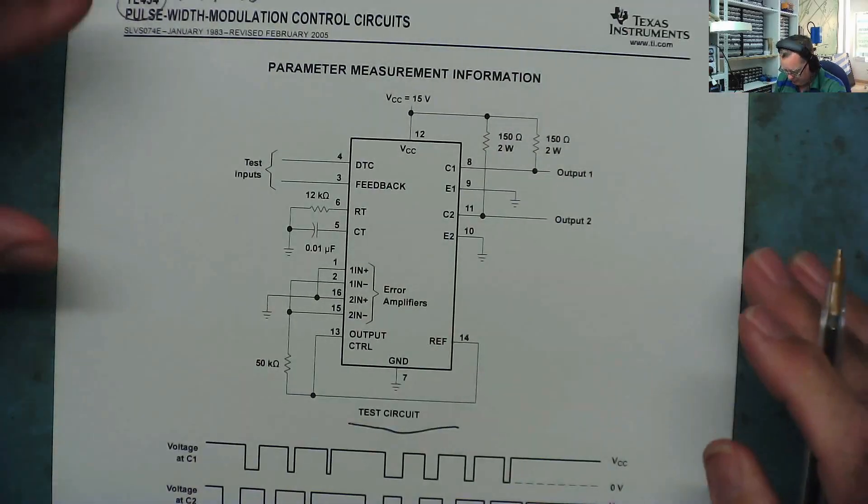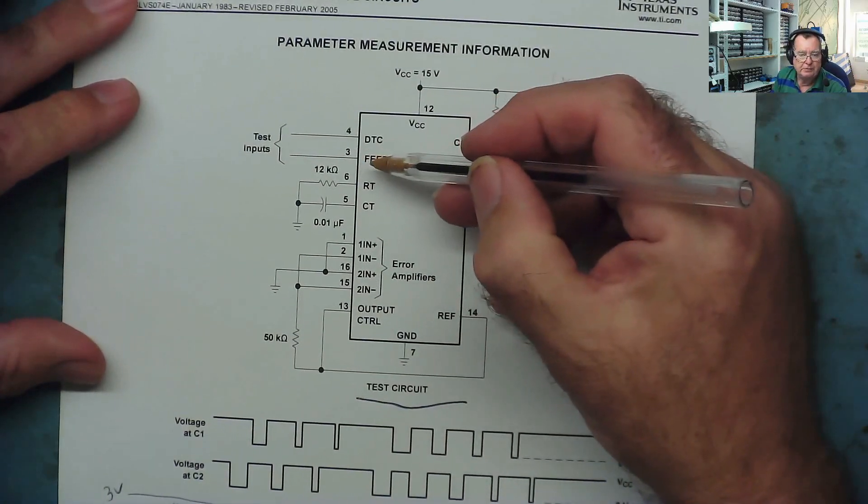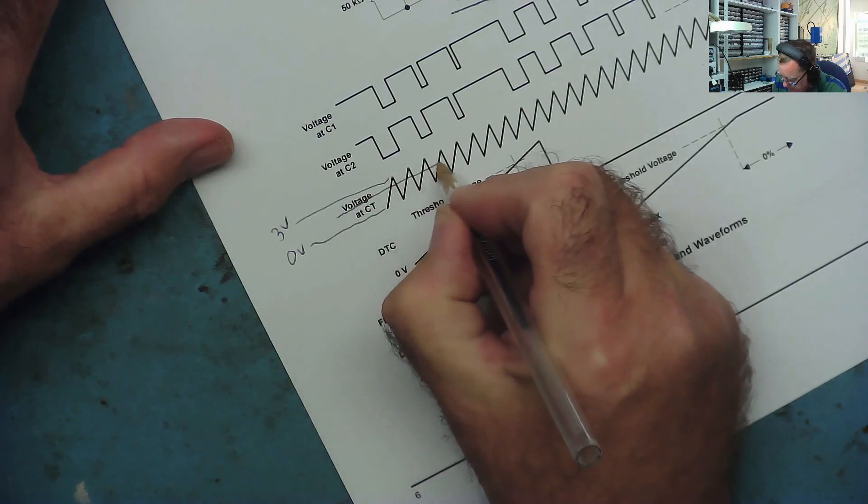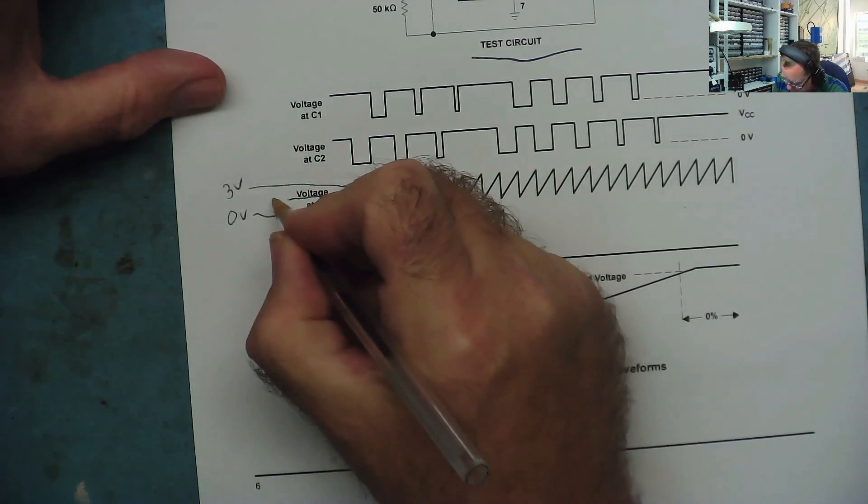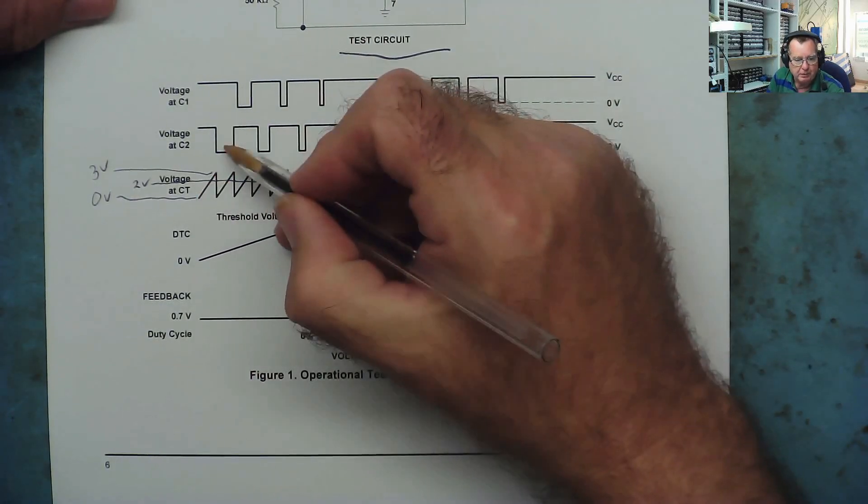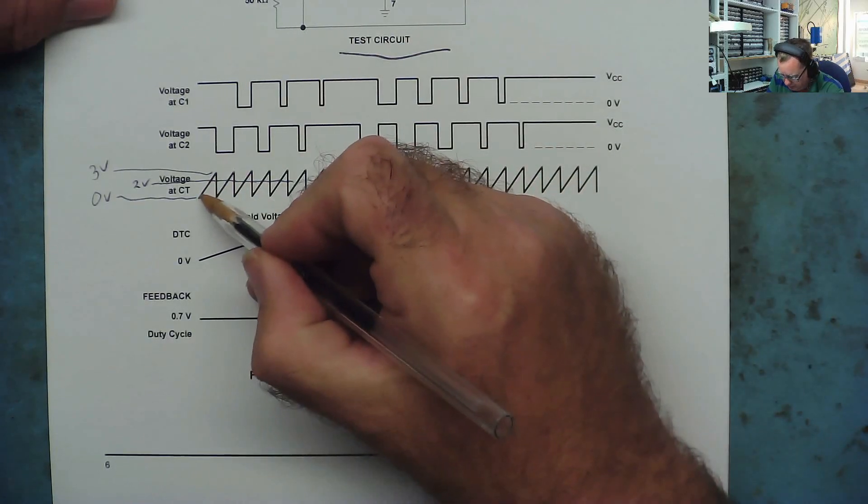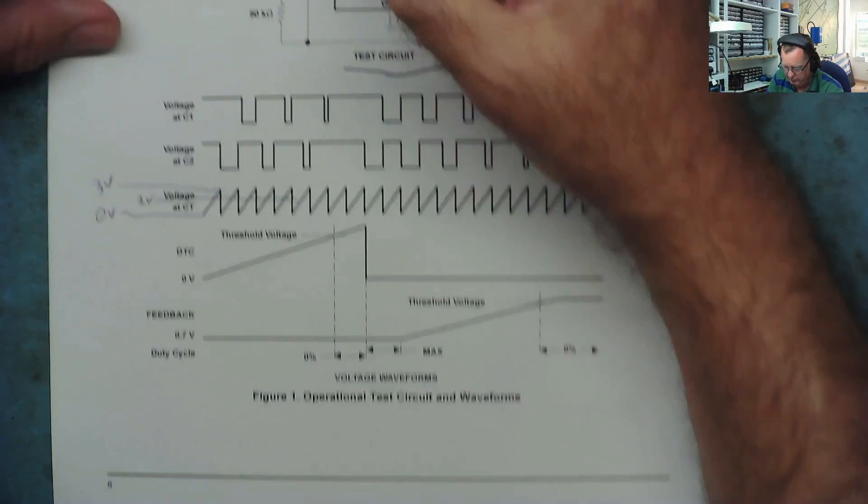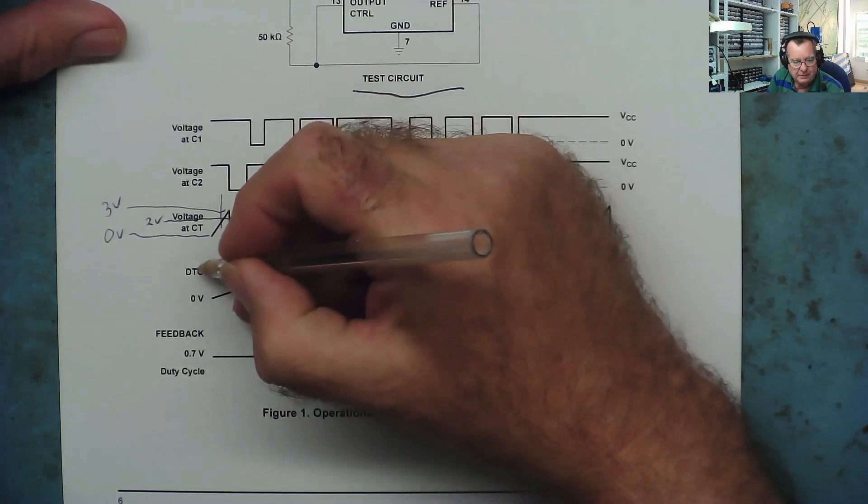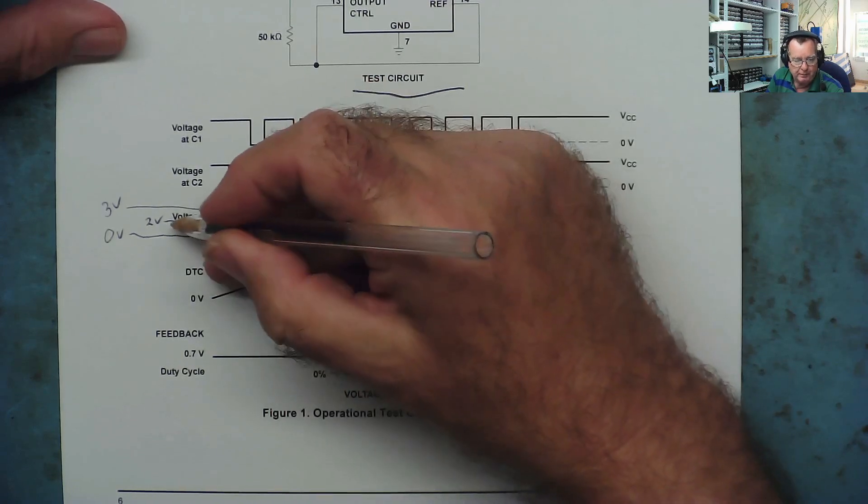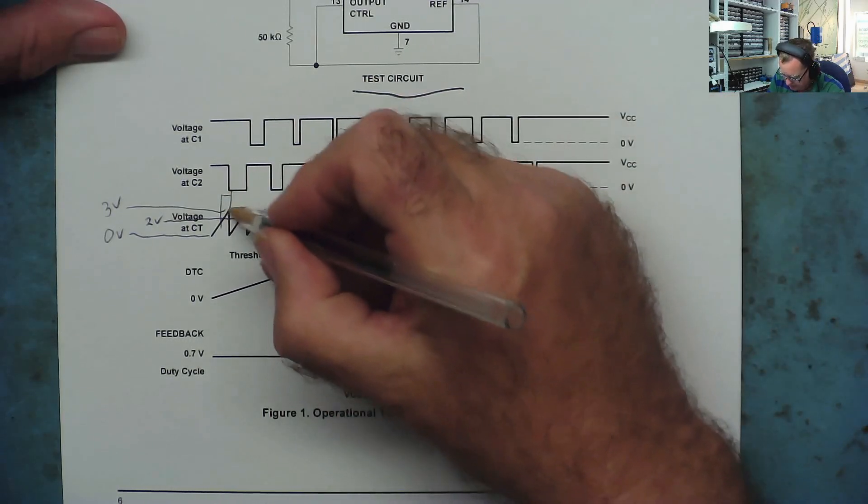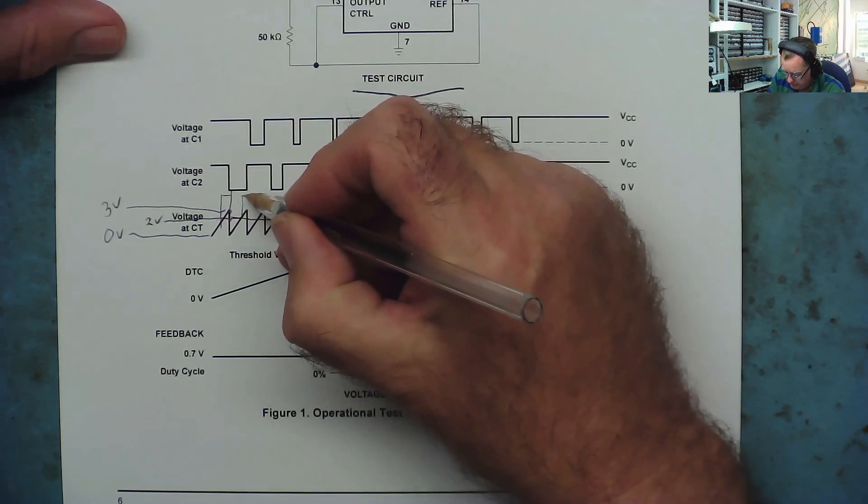So that's your oscillator. How does pulse width modulation work? Well, it's quite simple actually. It has a voltage on this pin here called feedback. Let's say the feedback voltage is 2 volts. The way this thing works is when the voltage on the capacitor is below 2 volts, the output is low, nothing happens. When the voltage on the capacitor goes above the feedback voltage, the output switches on, and that's what causes the pulse to start.